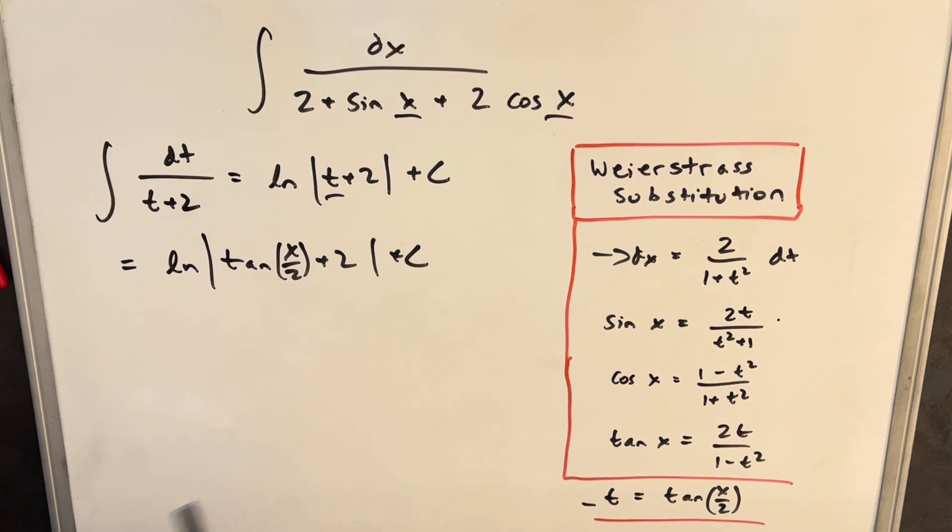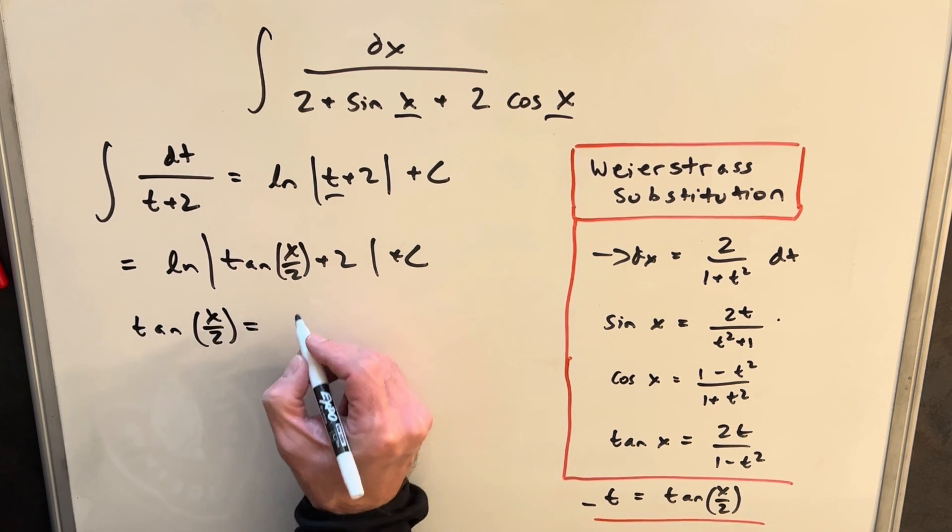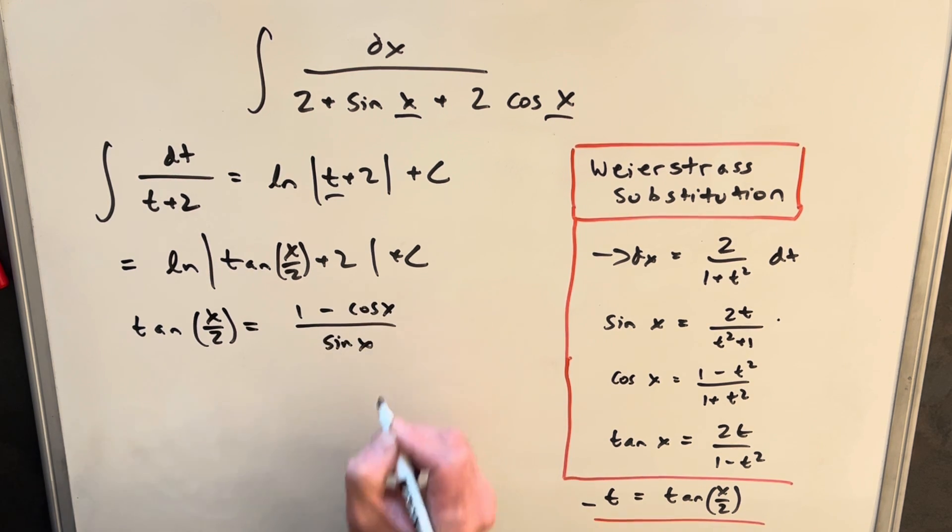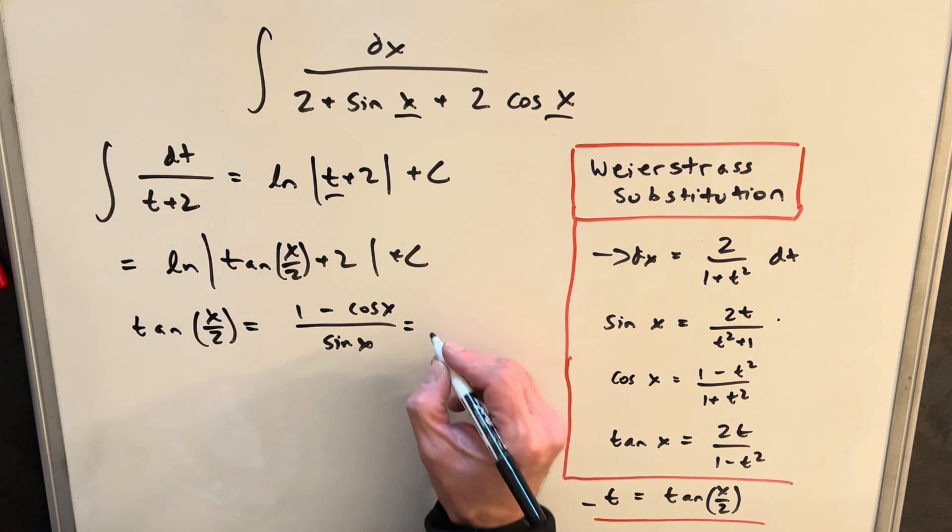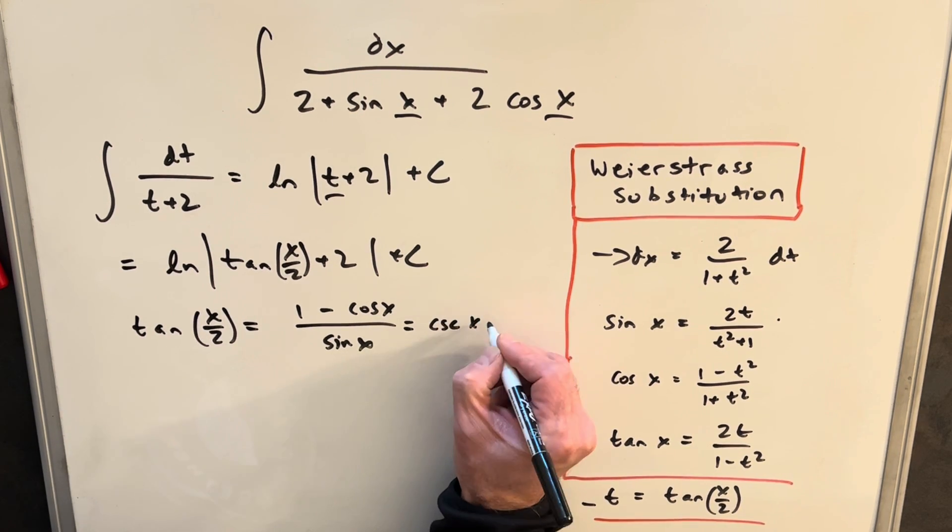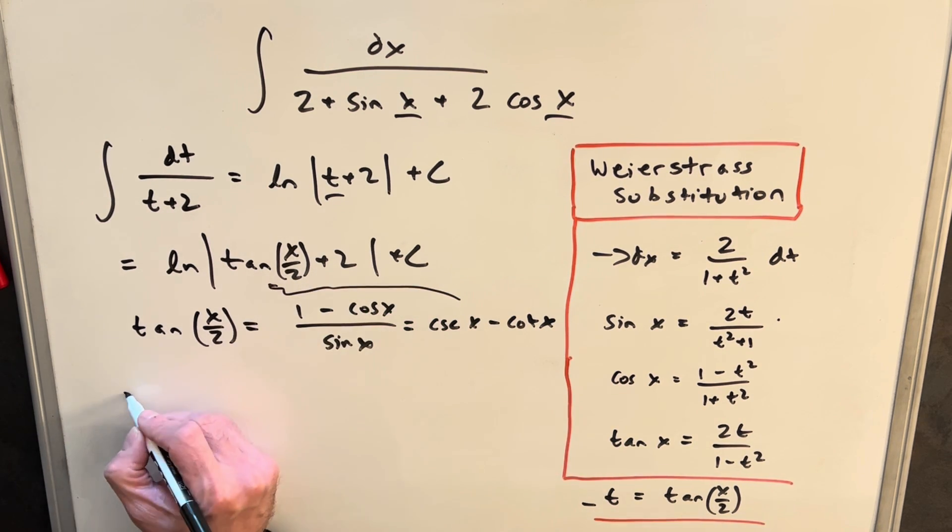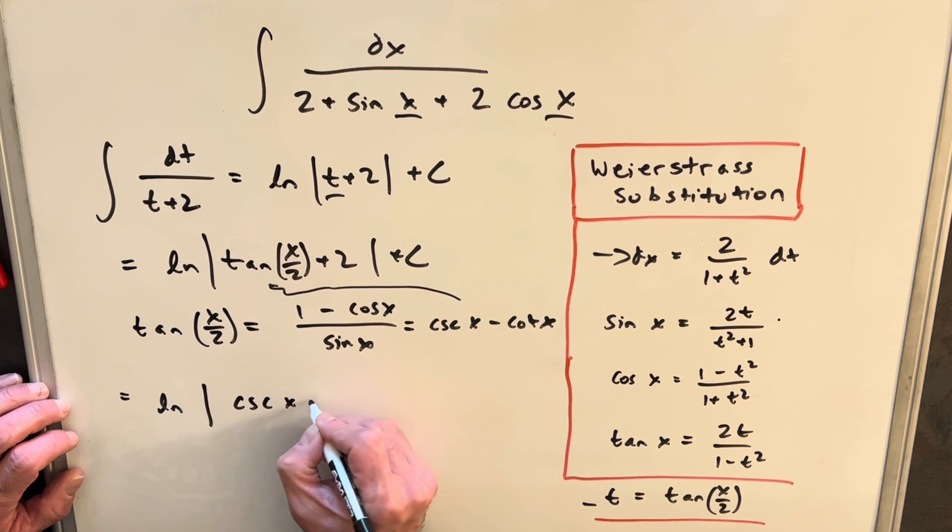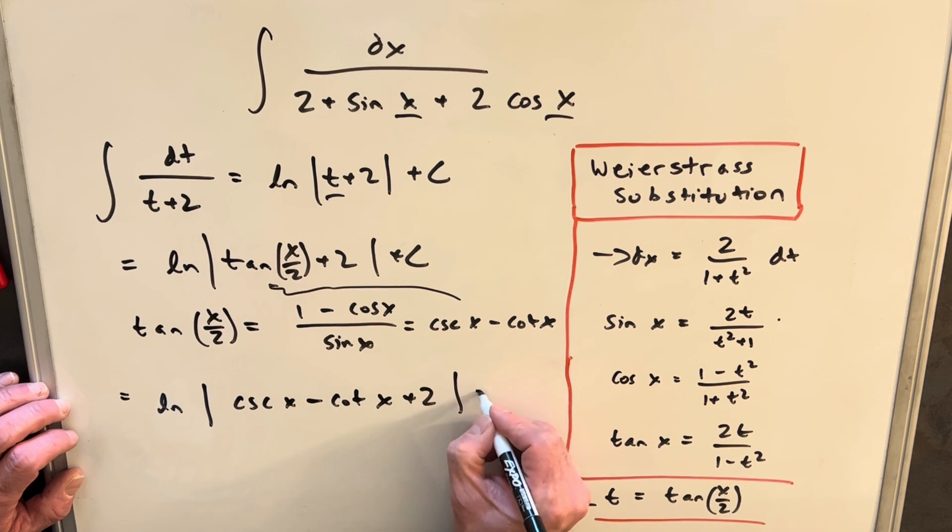But what we can do, if we want to get rid of this half angle, we can use this identity that says tan x over 2 equals 1 minus cosine x over sine x. We could also simplify this as cosecant x minus cotangent x. And then just put that back in our answer. So for our final answer, we can have ln absolute value cosecant x minus cotangent x plus 2 plus c. And we're done.